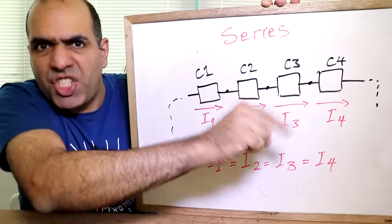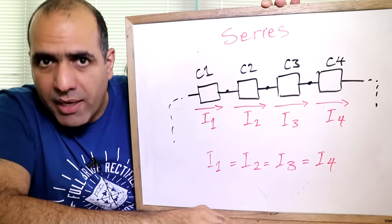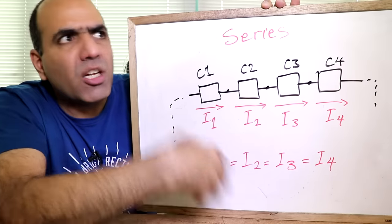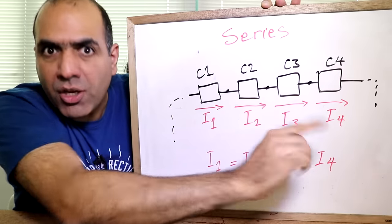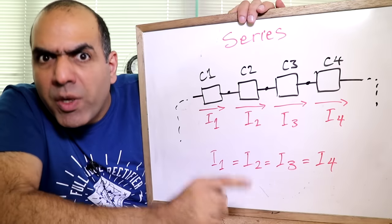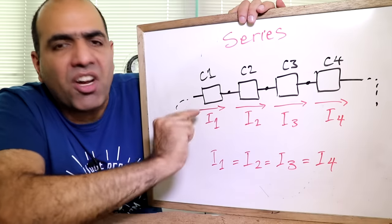When components are in series, the electric current through all of them is exactly the same, because electric charges are not leaking anywhere. So if the current enters the branch, it must go through it unchanged. You know what this means? We can switch the location of the components in a series branch and it doesn't affect the circuit because the current through all of them is equal.